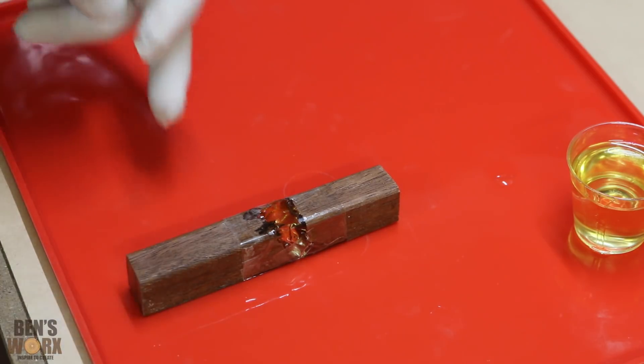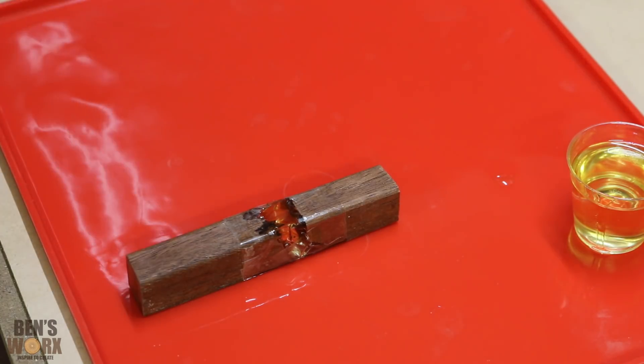Doesn't matter if it spills over the sides, just make sure you've got it on a silicon mat, that way it'll just peel off. And then once we sand all that up, you won't even know.